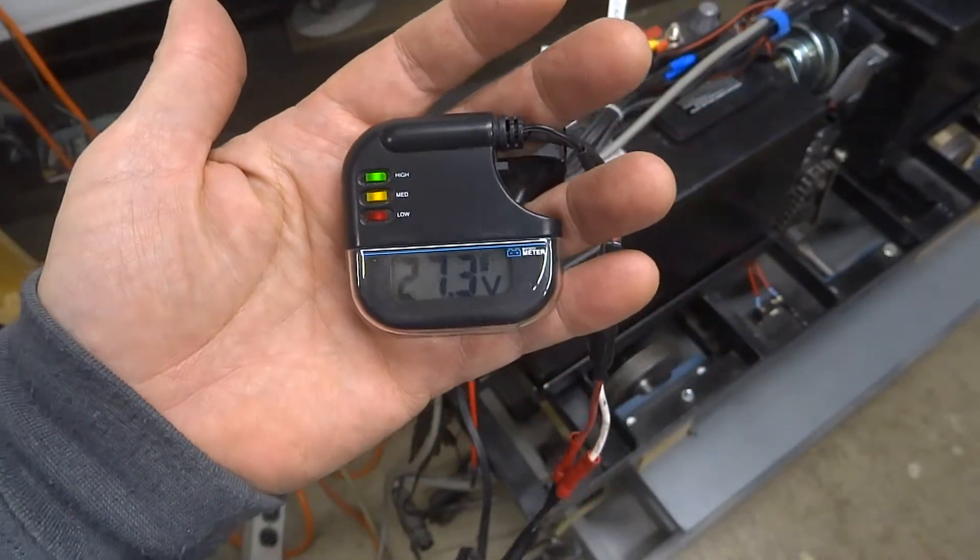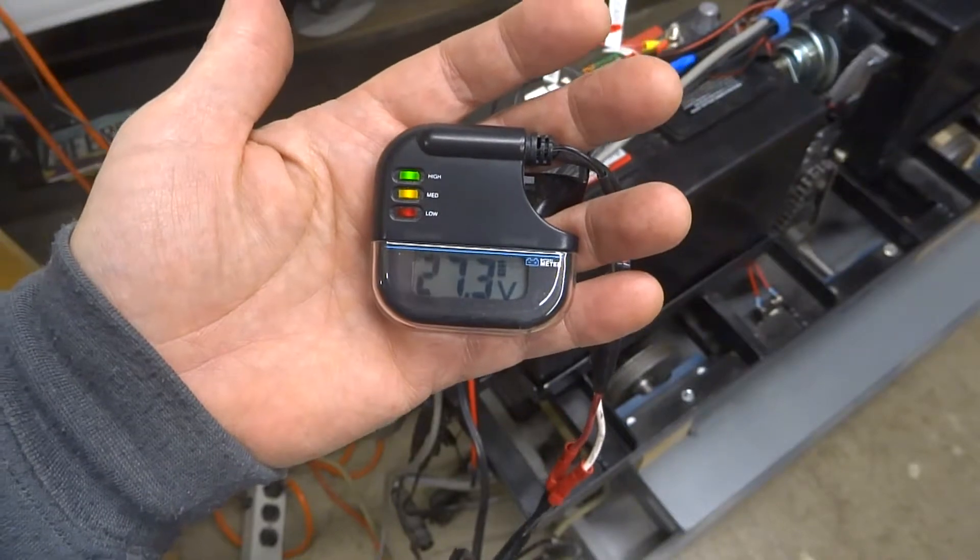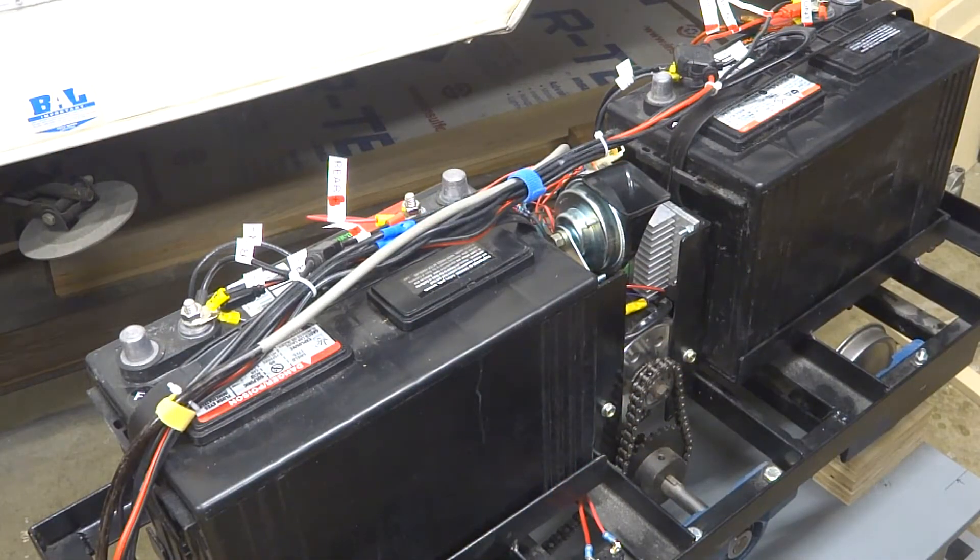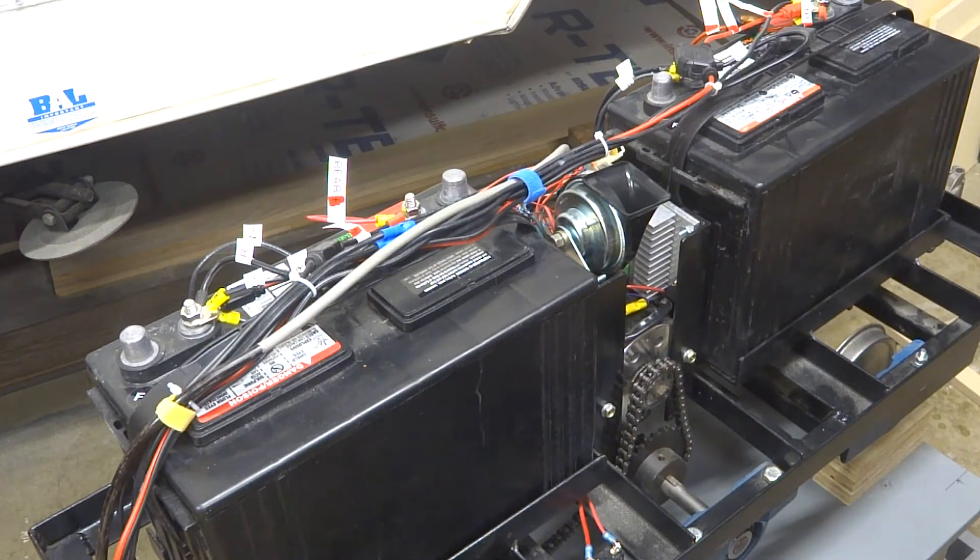Both batteries are on trickle charges right now, and you can see 27.3 volts. Well, I'm going to keep working. Thanks for tagging along, and I'll see you next time.